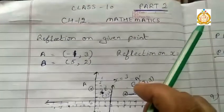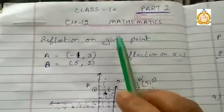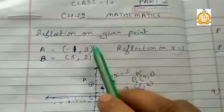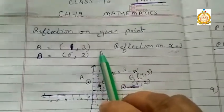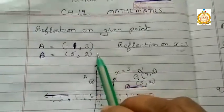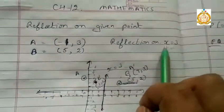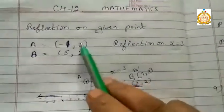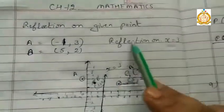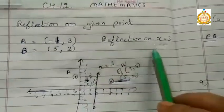Next concept of chapter number 12, reflection. Now see, reflection of x, y, and origin we already did. Now we have to reflect the given point on the given line or point. These two points are given and I have to reflect these two points on x equals 3.